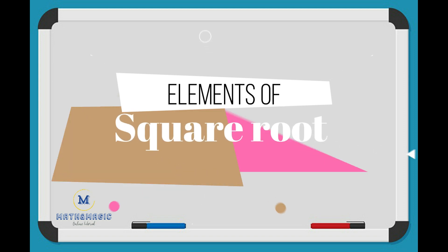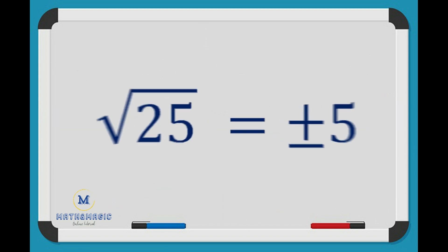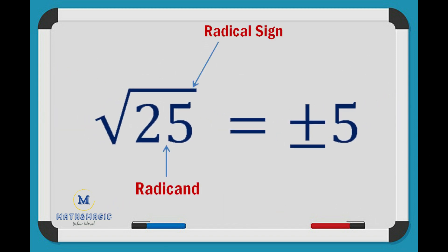For the components of a square root, we have the radical, the radical sign, index, and the square root value.